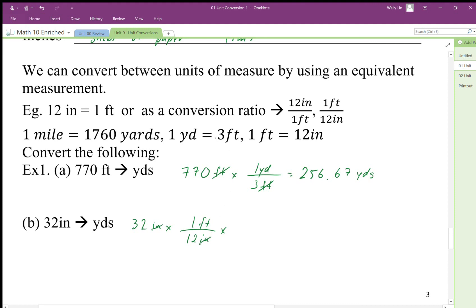Then I want to get rid of feet, so I'm going to use 3 feet on bottom so the units cancel out, and I end up with yards on top. Yards is the only unit that doesn't cancel, so that's the unit I end up with.